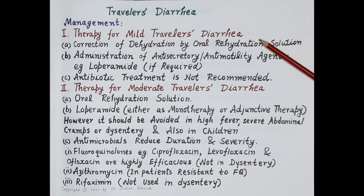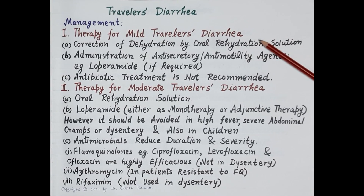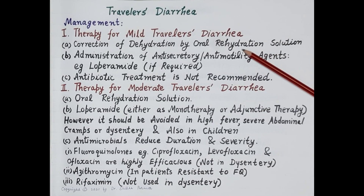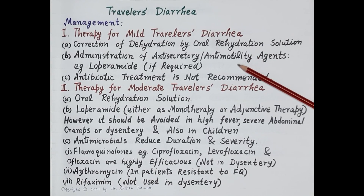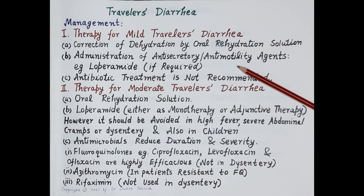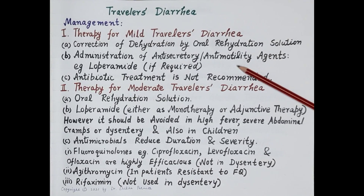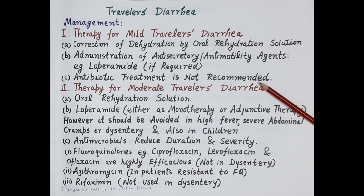Now let's discuss management. For mild travelers' diarrhea: the majority of cases are mild and self-limited and do not require treatment. Correction of dehydration — restoring water and electrolyte loss — is the mainstay of treatment, accomplished by administration of oral rehydration solution (ORS). Short-term use of anti-secretory or anti-motility agents such as loperamide may be considered; these shorten duration and severity of diarrhea. Loperamide should not be given to children two years of age or younger. Antibiotic treatment is not recommended for mild travelers' diarrhea.